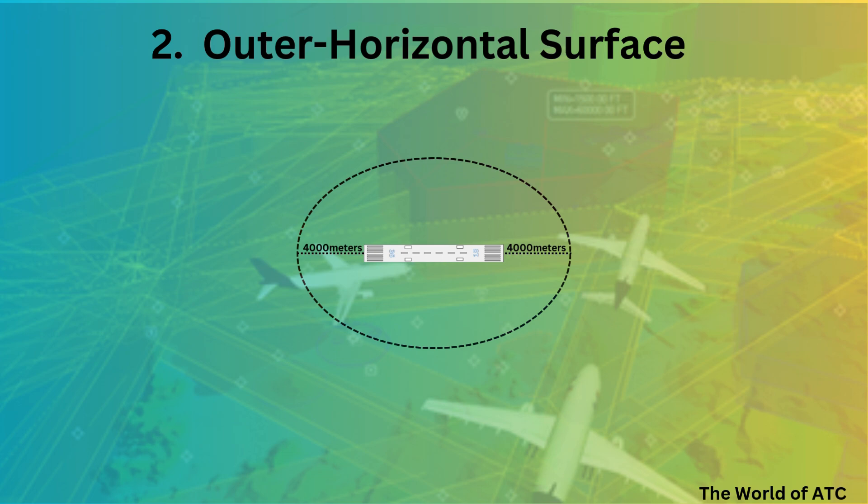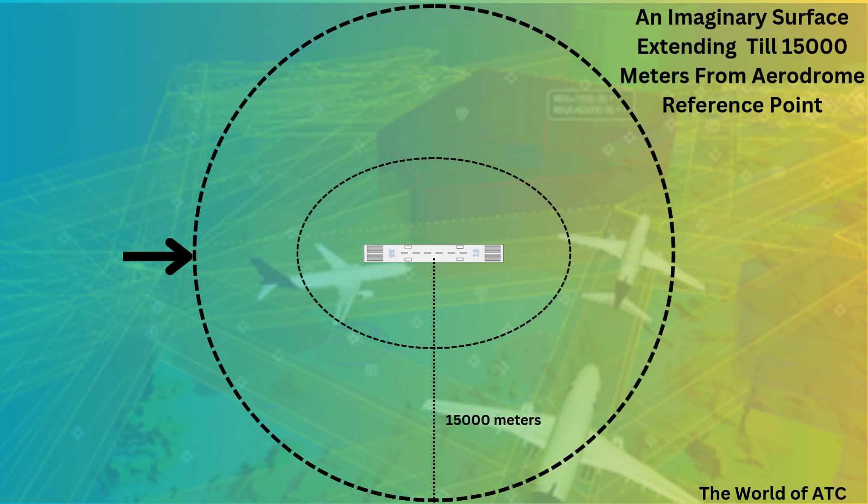Now, the outer horizontal surface is actually an imaginary surface that extends from the aerodrome reference point to a minimum radius of 15 kilometers for aerodromes with runway reference code 3 or 4.